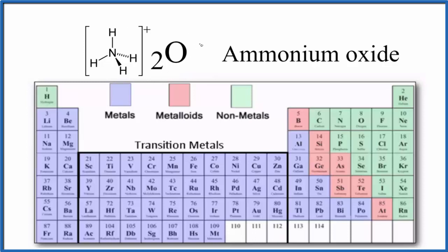We have two of them because oxygen, right here, group 16, sometimes called 6A, is 2 minus. So we need 2 times the 1 plus. That gives us the 2 plus, the 2 minus. So we have NH4O.